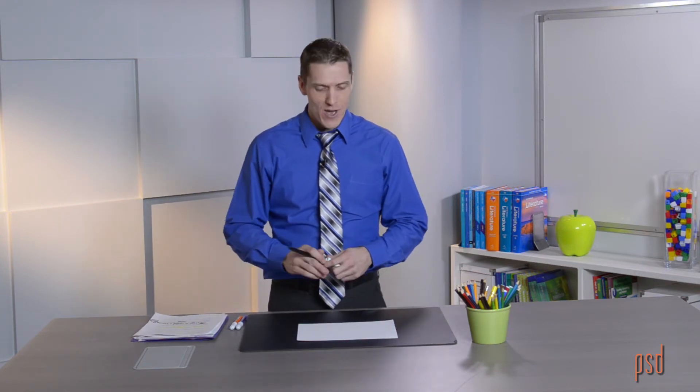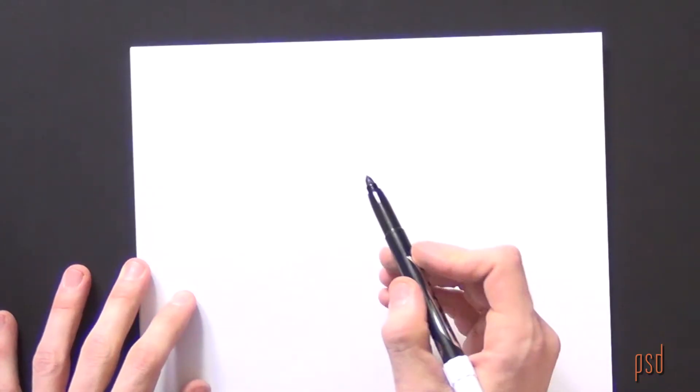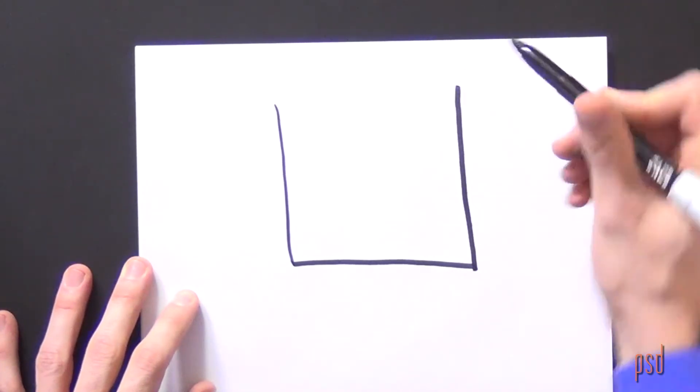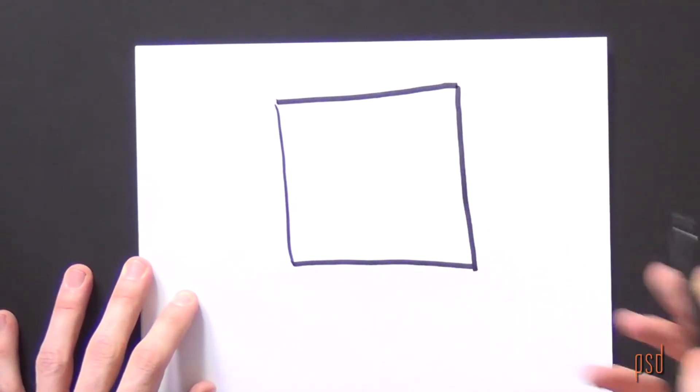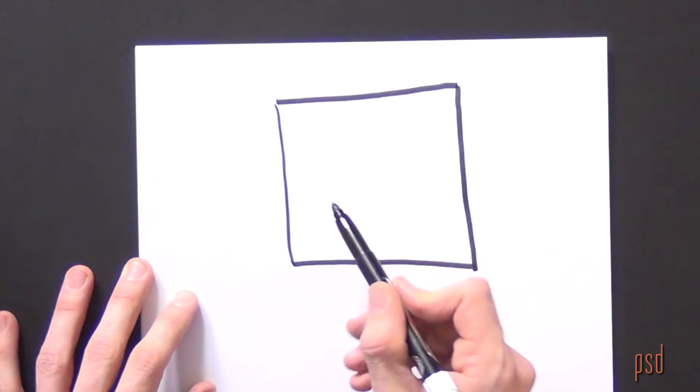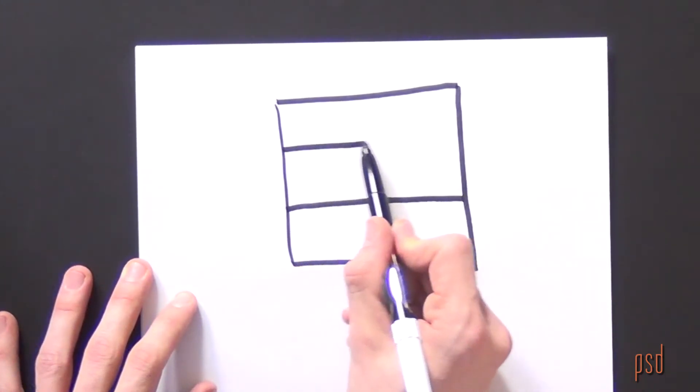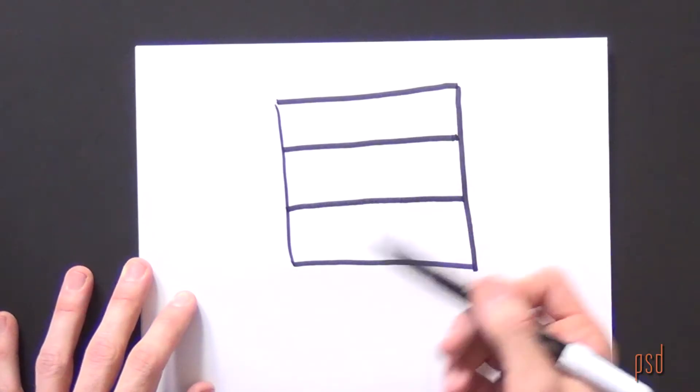To represent this problem, I will use paper, pencil and a pictorial model. First, I want to represent one-third of a gallon. I'll draw a rectangle to represent a gallon tub and I'm going to break it into thirds.